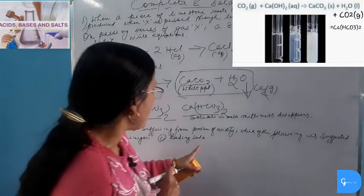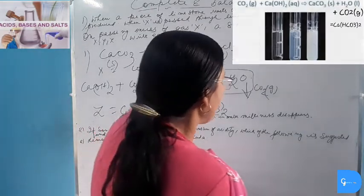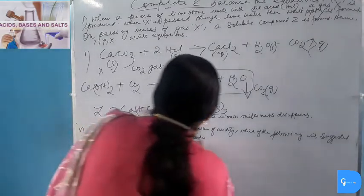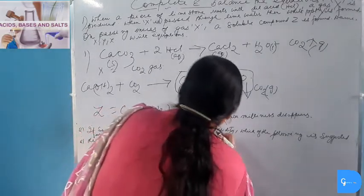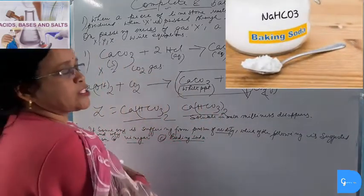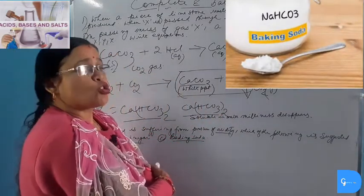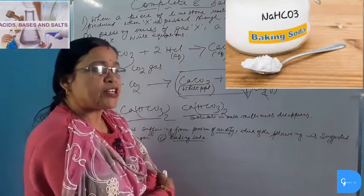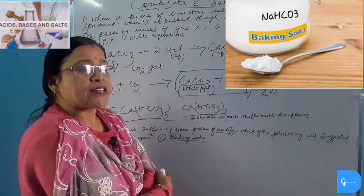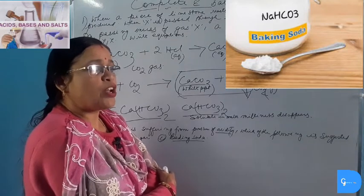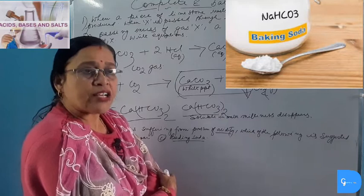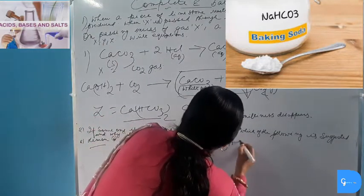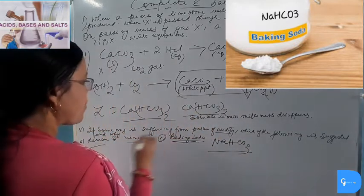If someone is suffering from acidity, the stomach is producing excess hydrochloric acid. We must take a basic solution to neutralize it. The formula of baking soda is Sodium Hydrogen Carbonate (NaHCO₃), which is a basic compound and can be suggested.